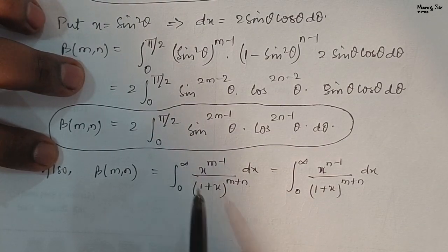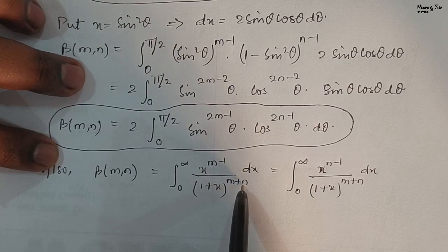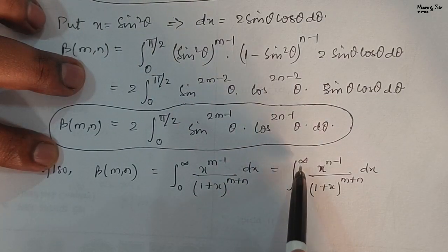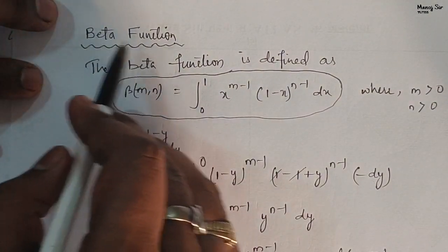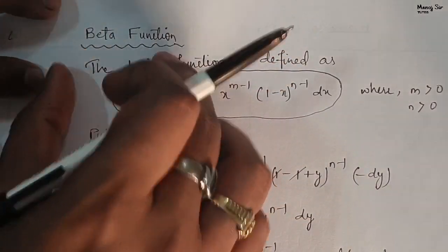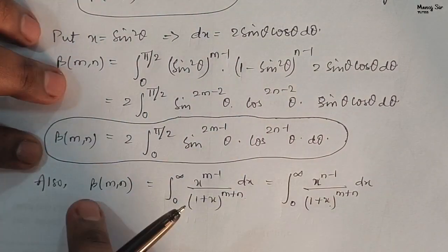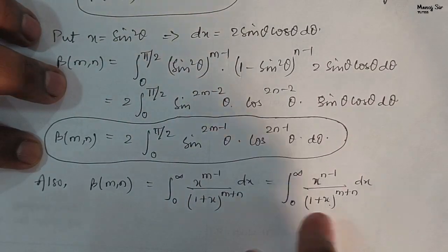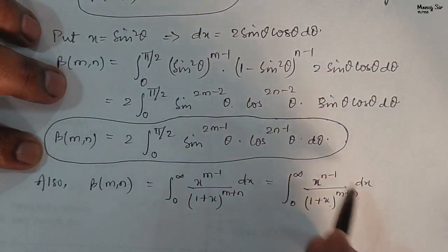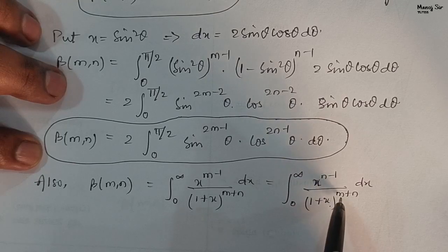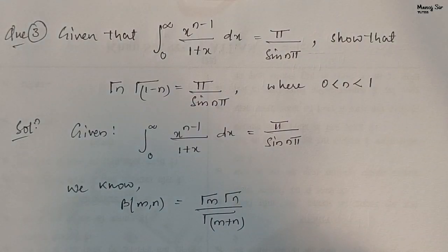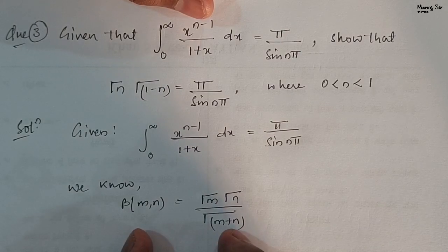In the beta function, beta(m, n) equals the integration from 0 to infinity of x to the power n minus 1 upon 1 plus x to the power m plus n dx. This is a very important result from video number 19, where we studied the beta function in detail and derived this result.